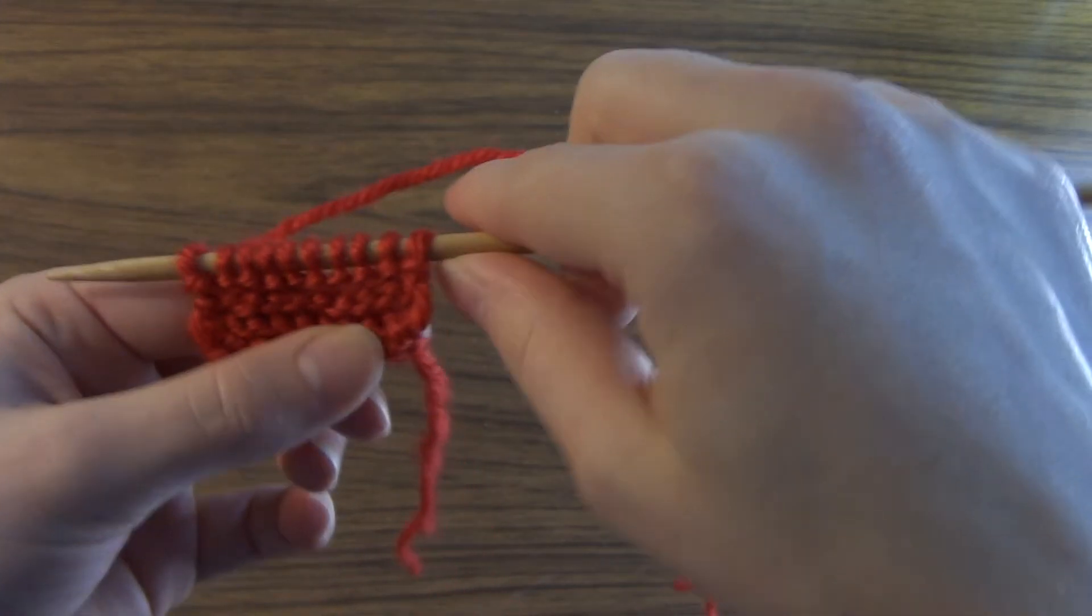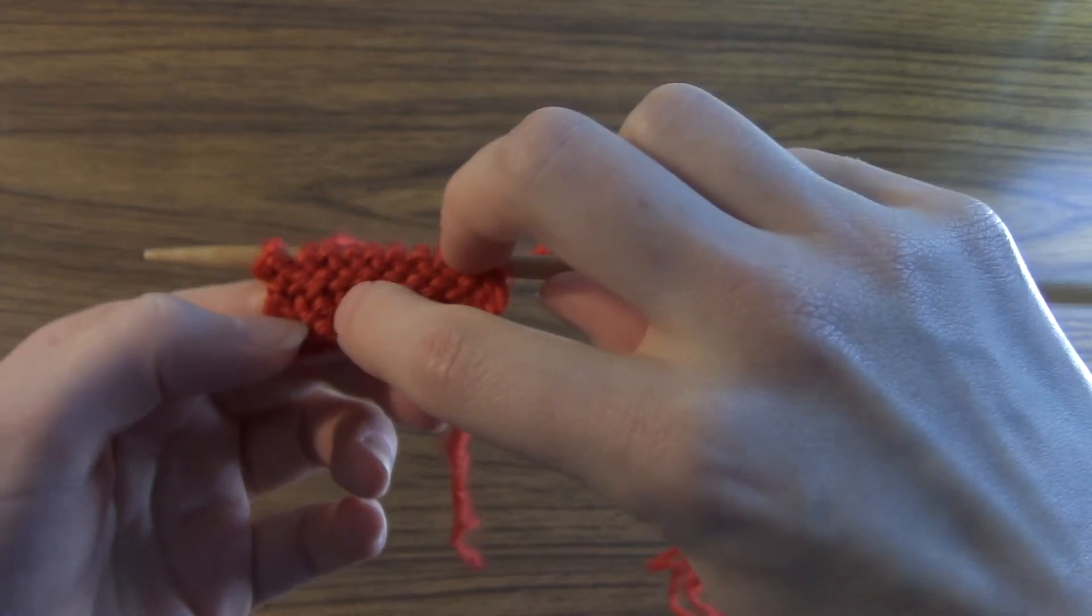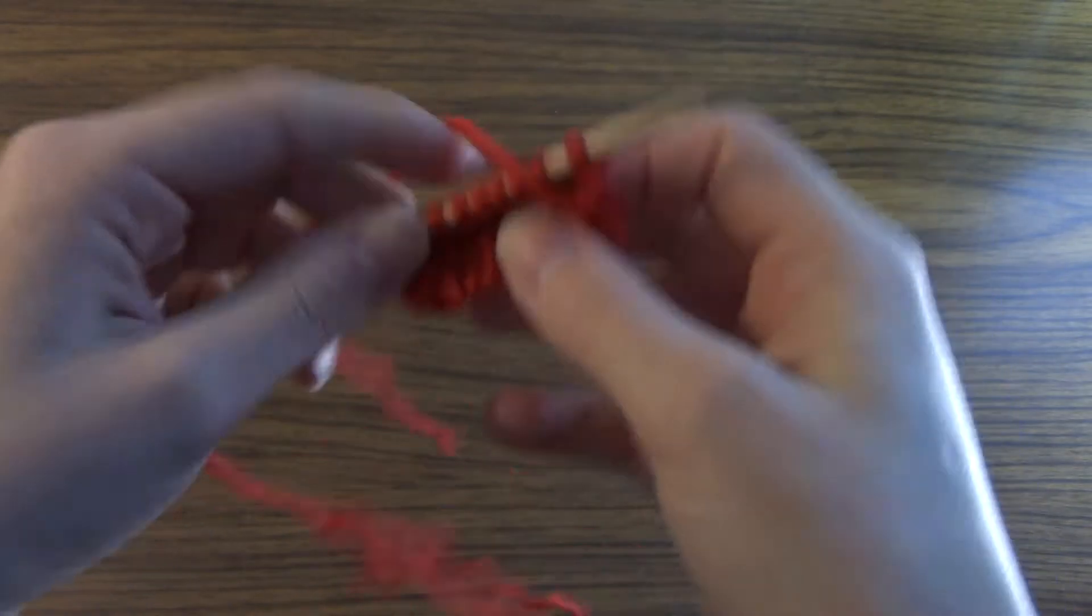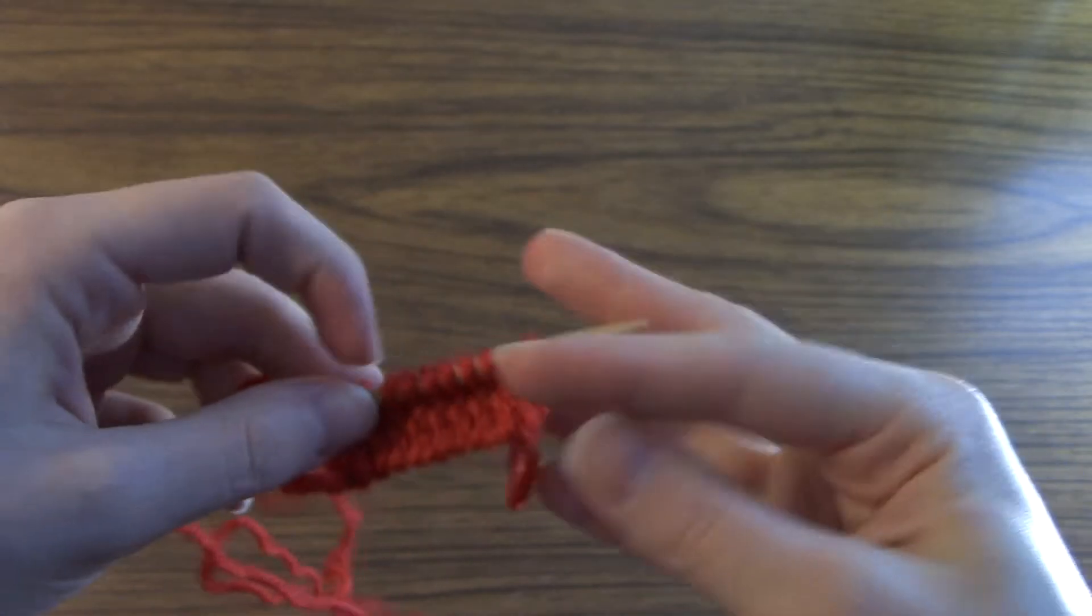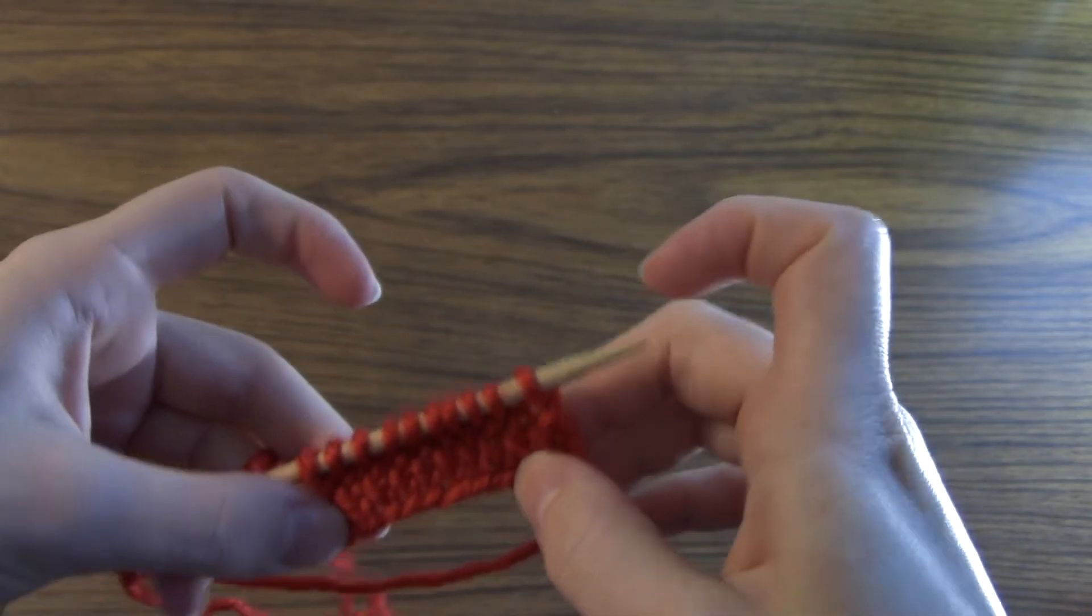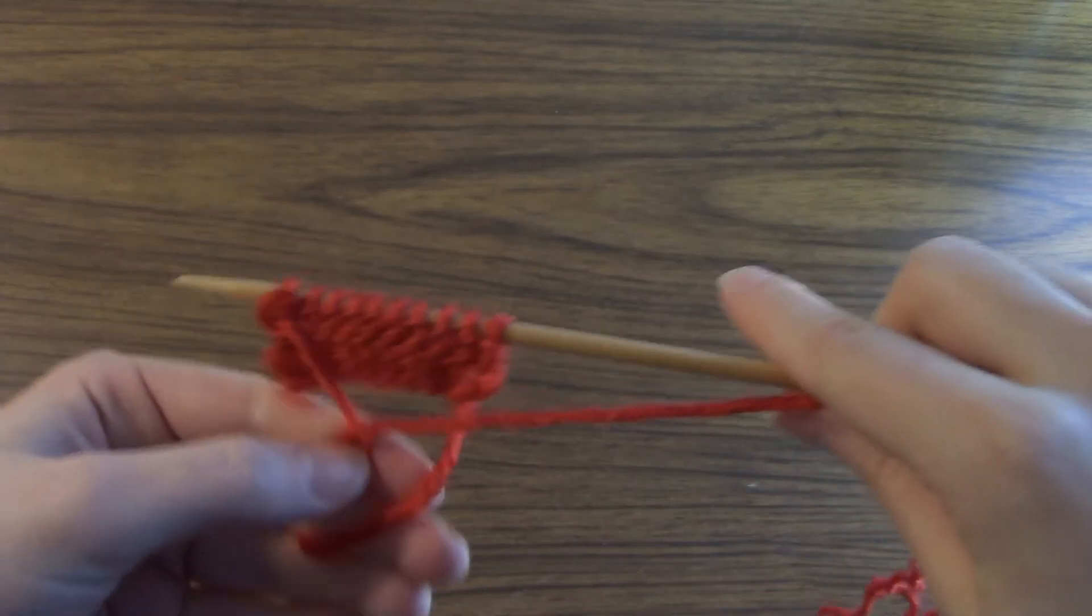Alright, and this is what a side full of purls look like. You can see you have these tiny little bumps and then the knit side. And again, this is called the stock knit pattern where you knit the right side and you purl on the wrong side.